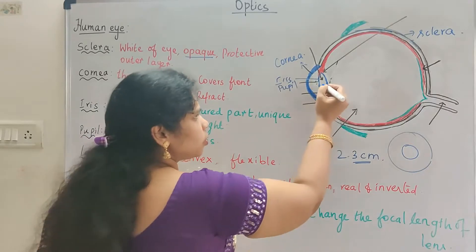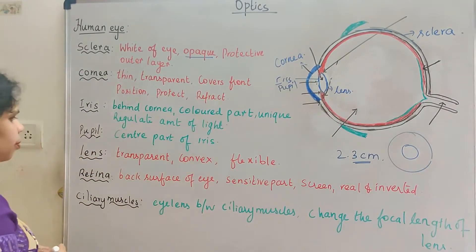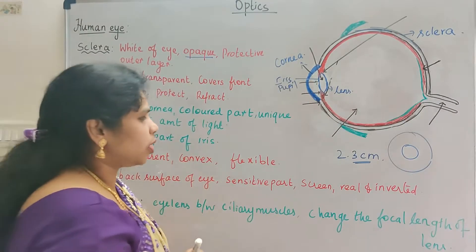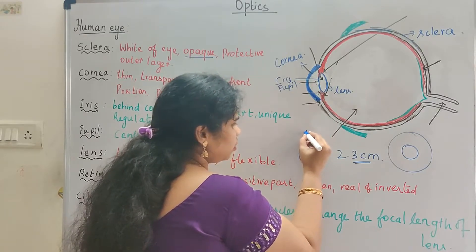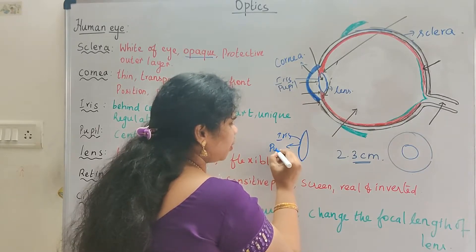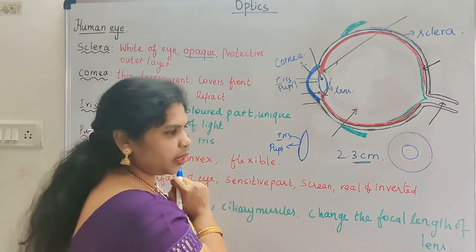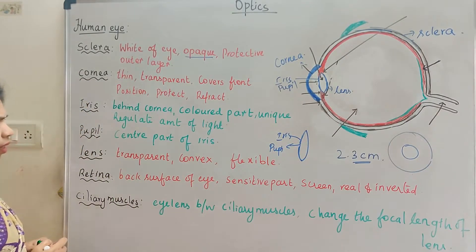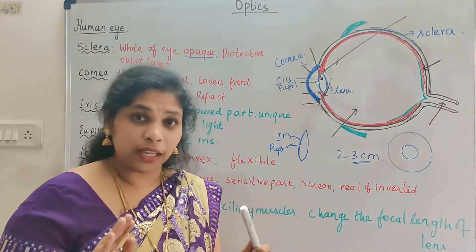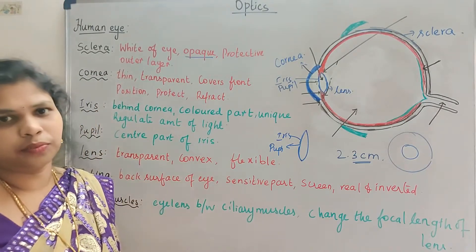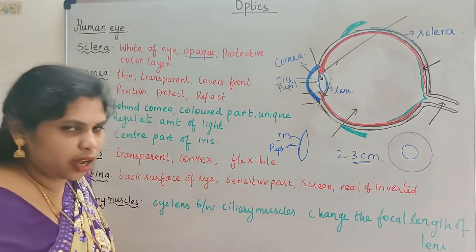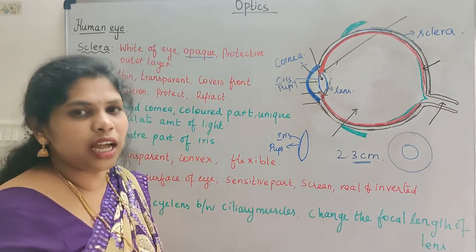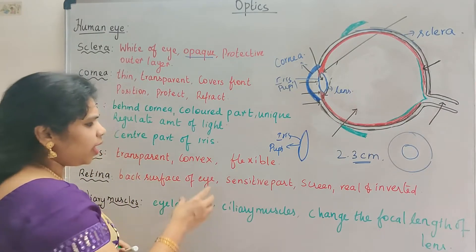This one is the lens. The lens is behind the iris — it is transparent, which means it allows the light to pass through it. We have our own lens: a convex lens, which helps to converge the light. The lens is also flexible.